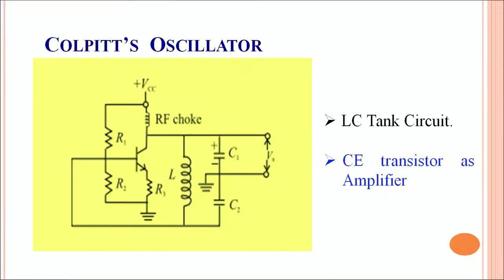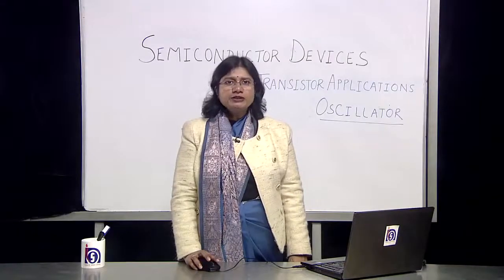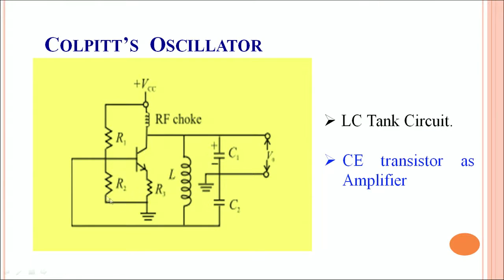We have an LC tank circuit which acts like an oscillating circuit, and the transistor is typically used in common emitter configuration. In the Cole-Pitts oscillator, a small input signal is amplified with the help of the amplifying circuit. Some portion of this amplified output is fed back via this LC tank circuit — this is the inductor and this is the capacitor — so it feeds back the portion to the input. This feedback mechanism converts the simple amplifier into an oscillator, and thus the output measured across here has sustained oscillations.